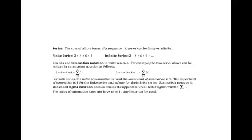That's arithmetic sequences. If we take all those terms and add them up, we have a series. A series is the sum of all the terms of a sequence, and a series can be finite or infinite. If you have pluses instead of commas, you've got a series — so 2 plus 4 plus 6 plus 8 is a finite series, or it can go on and on for an infinite series.